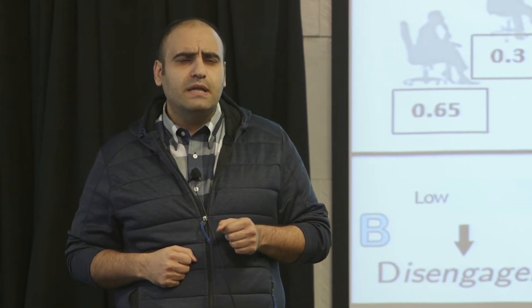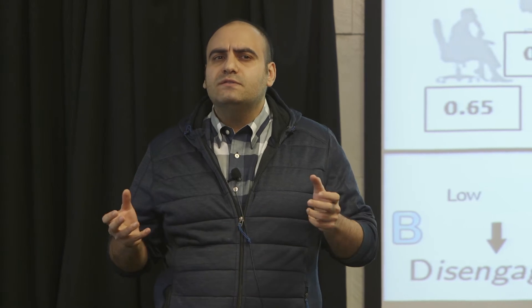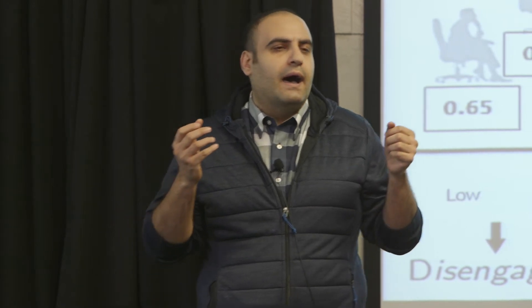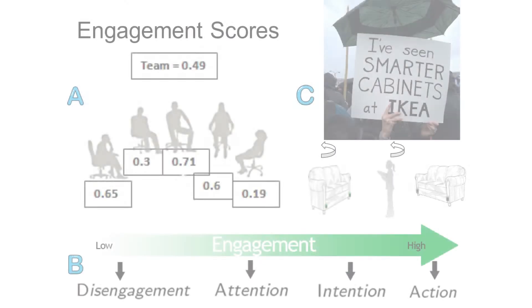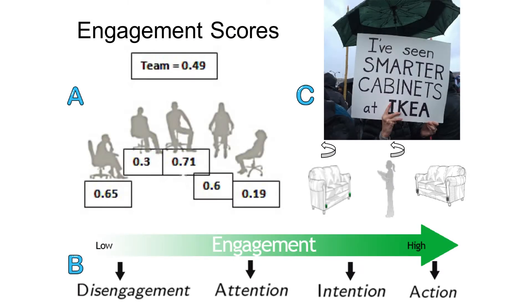There was a project in a company called Smart Meeting Room, where we wanted to find out the level of engagement of people in the meeting. In this project, we use several features of the body, such as body direction, lean direction, and gaze direction, to analyze body features and extract engagement.